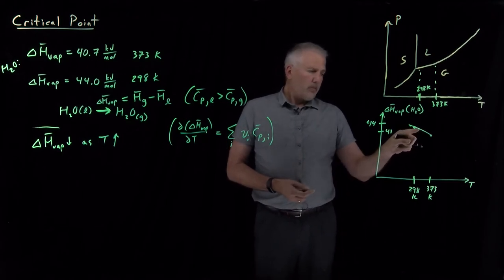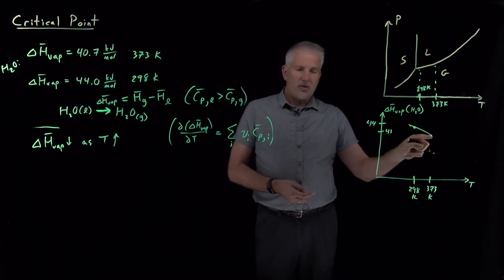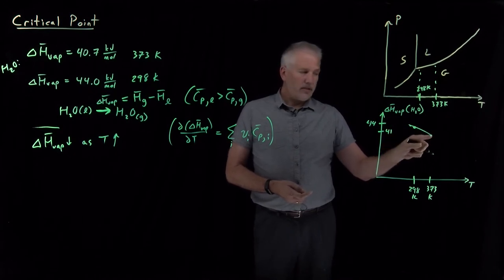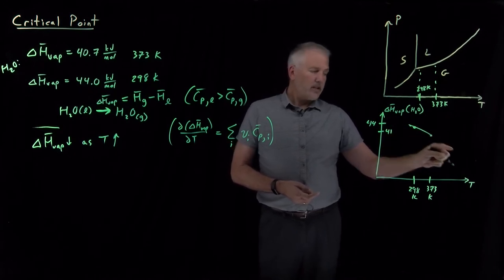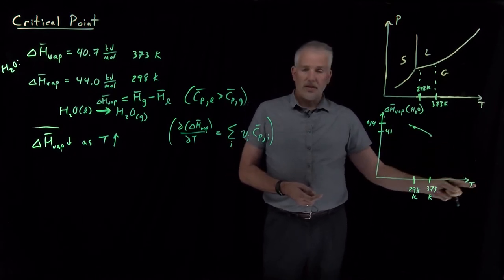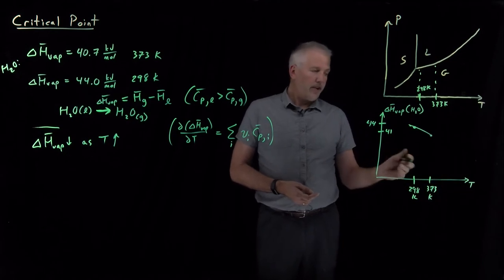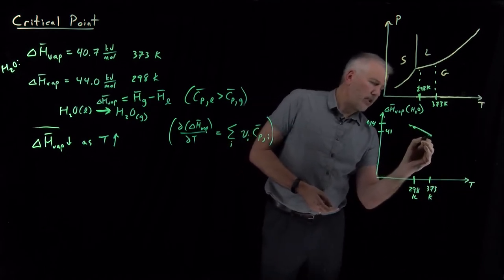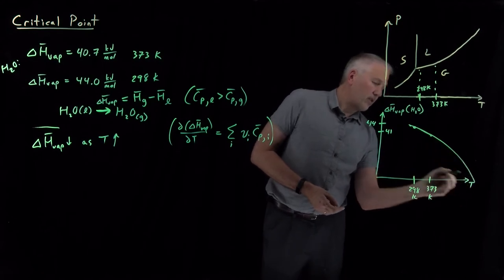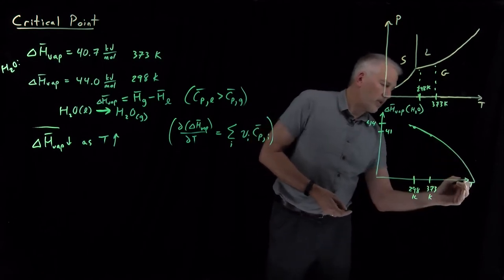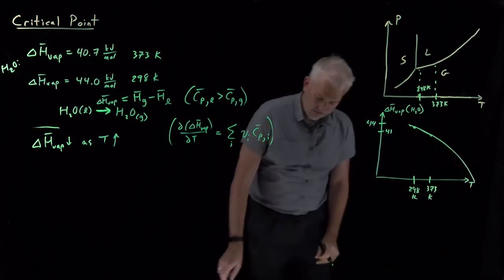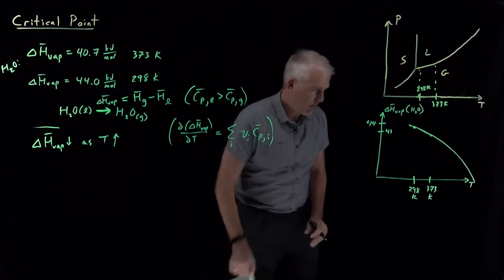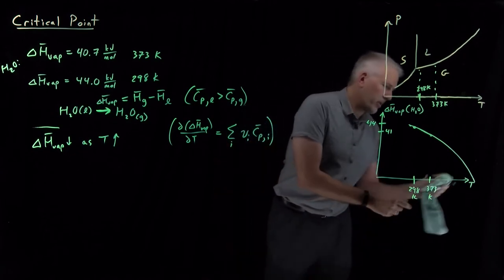One important observation: if the enthalpy of vaporization continues to drop at roughly the rate it's been dropping, it will eventually cross zero. And in fact that does happen — the enthalpy of vaporization continues to drop, actually beginning to fall a bit faster, so the curve becomes very steep as it approaches the axis.